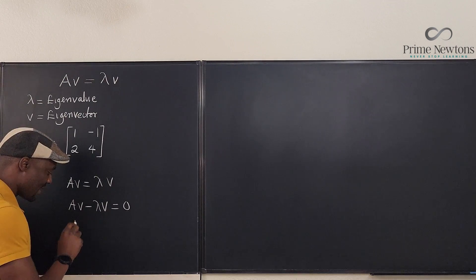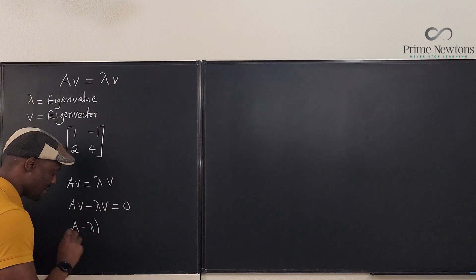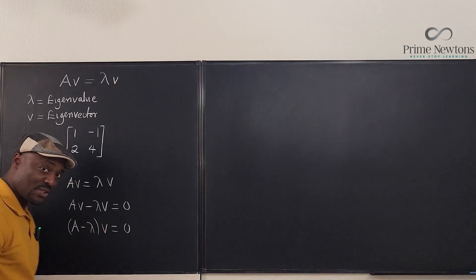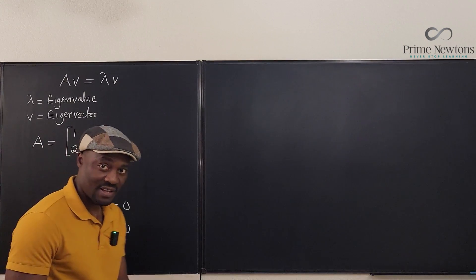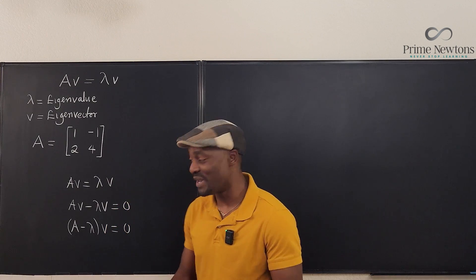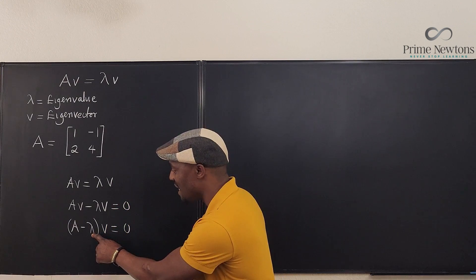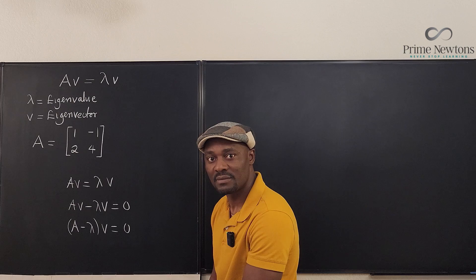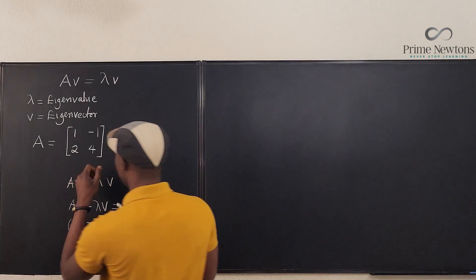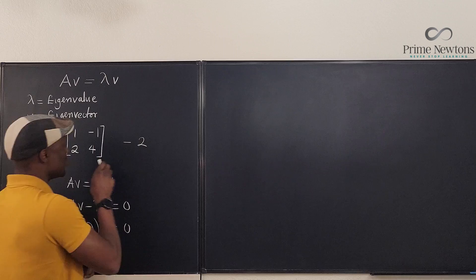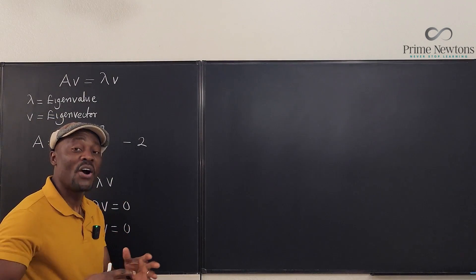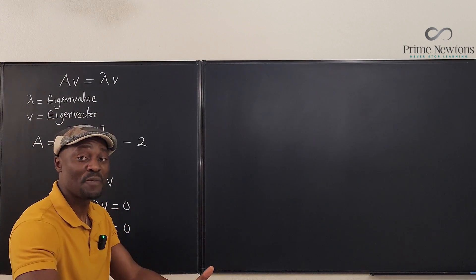Now let's factor out v: (A - λ)v = 0. This looks nice but is actually meaningless — you cannot subtract a number from a matrix. A matrix looks like a grid of numbers, so saying 'matrix minus 2' makes no sense. You cannot subtract anything from a matrix unless the other thing is also a matrix.